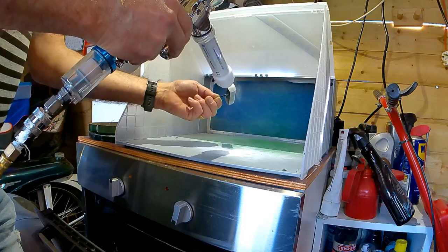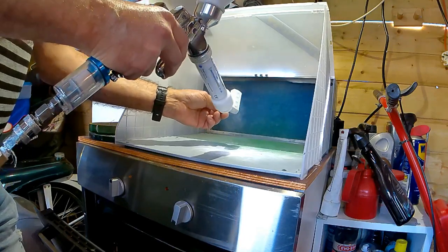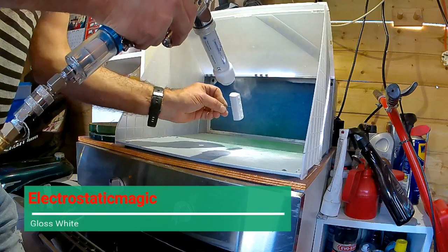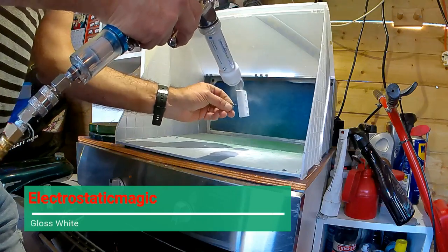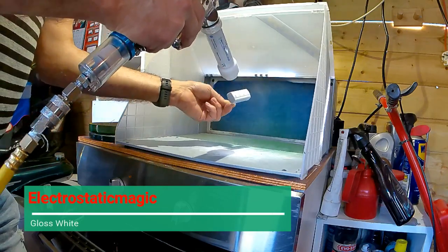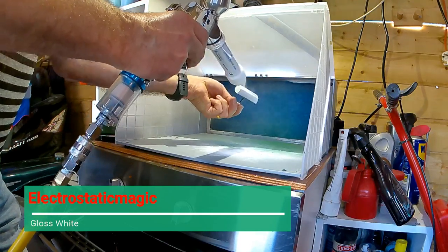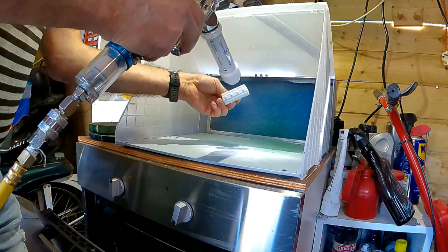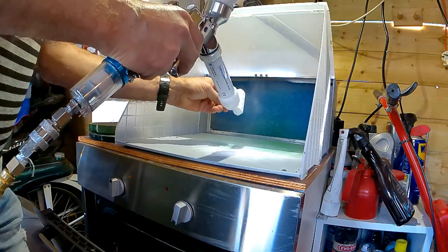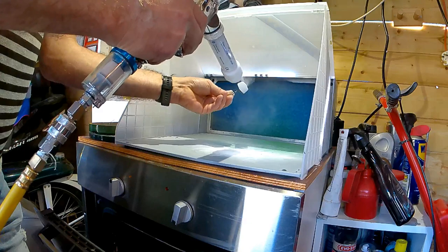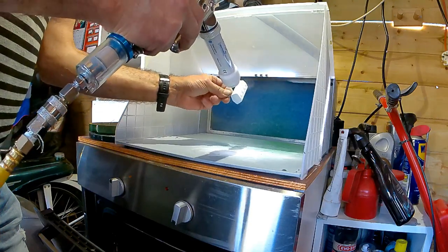And for the tanker, that's Electrostatic Magic gloss white. I found that doing white and cream are the worst colors. I do hate doing them—they seem to take just a little bit more powder as they go on rather thinly otherwise.